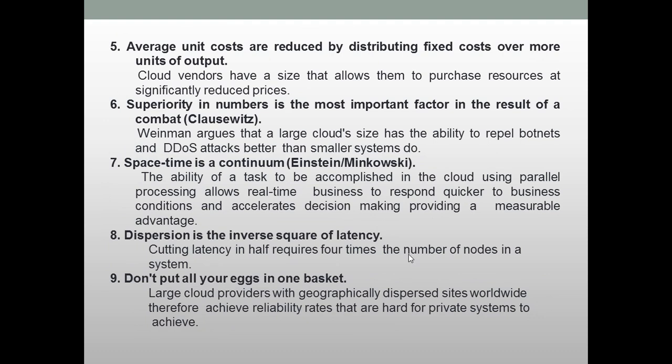The fifth law, similar in context to the fourth, says: average unit costs are reduced by distributing fixed costs over more units of output. When we distribute our fixed costs over more units, the average unit cost can easily be reduced. Cloud vendors have a scale that allows them to purchase resources at significantly reduced prices and distribute those resources to multiple people at the same time.